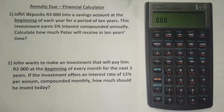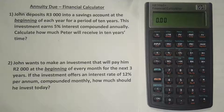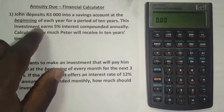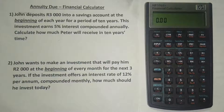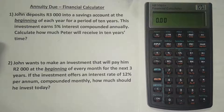We've done these same examples before, but we did them using the formula. So if you'd like to check that one out, you'll find the link in the description below. Now let's look at our first example. John deposits 3,000 rand into a savings account at the beginning of each year for a period of 10 years. This investment earns 5% interest compounded annually. Calculate how much he will receive in 10 years time.